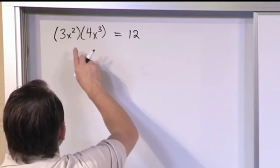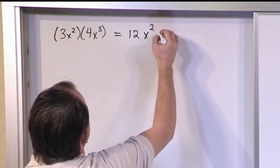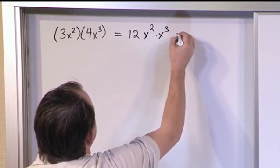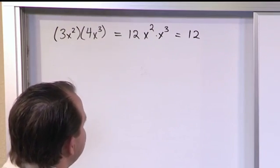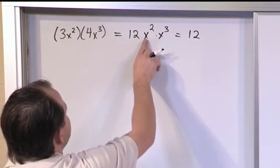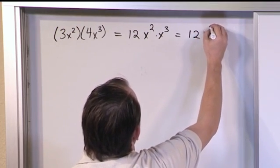And then you're still going to have these variables and exponents multiplied. So for now let's just leave it as x squared times x cubed. Now we've already covered this. What do you do when you have exponents, variables that have exponents multiplied together? The bases are the same so I can add the exponents. So it will be x to the fifth power.